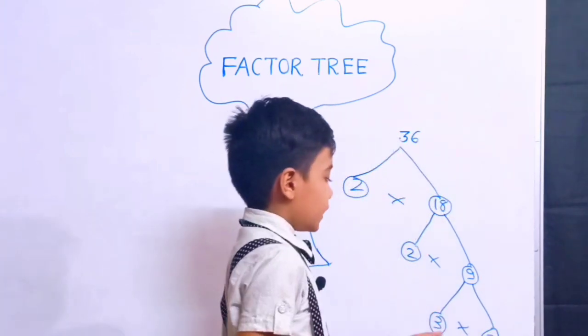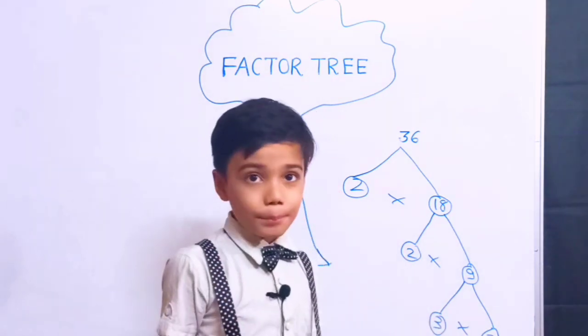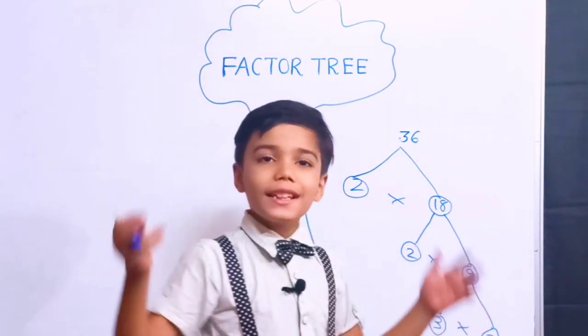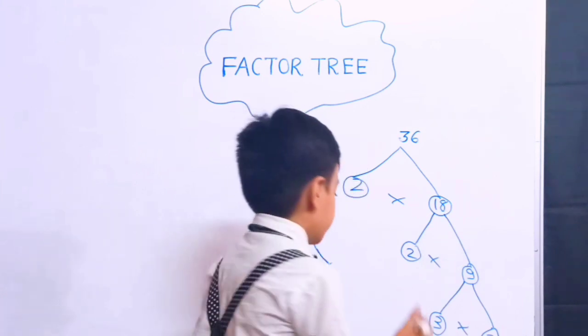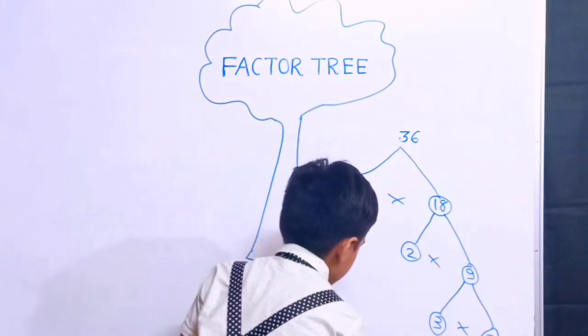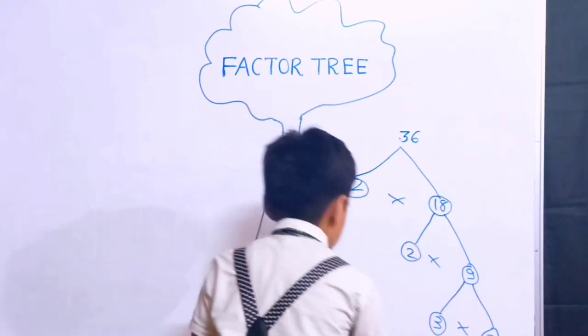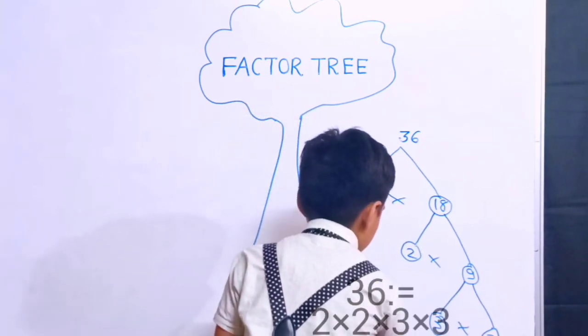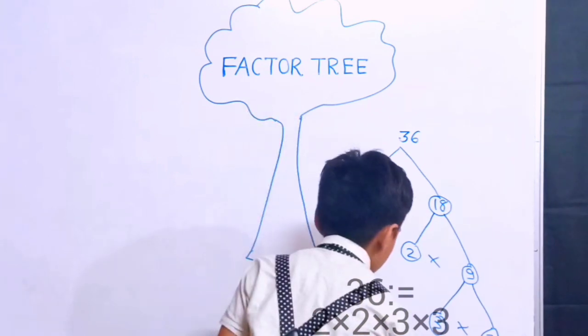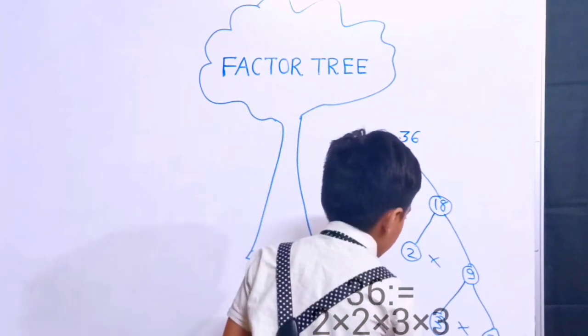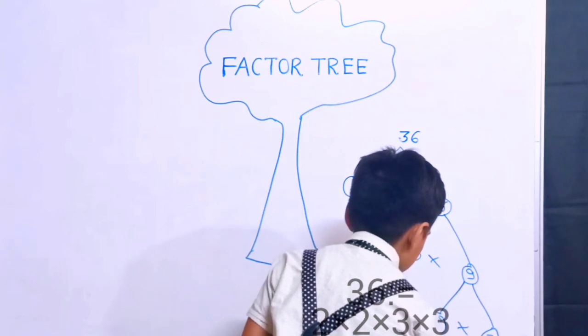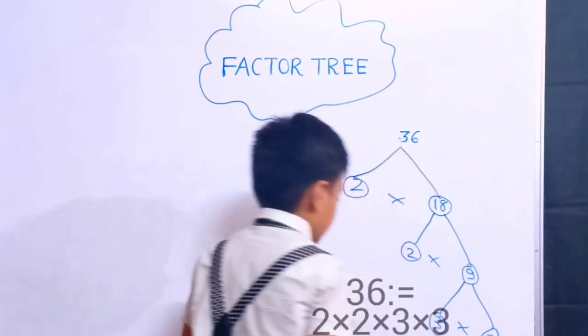We will try to divide from 3. 3 is not a composite number, so prime factorization is over. Remember, the prime factors of 36 is 2 by 2 by 3 by 3.